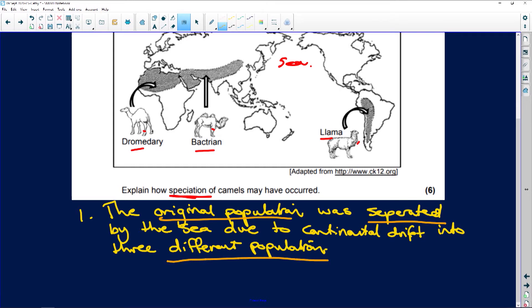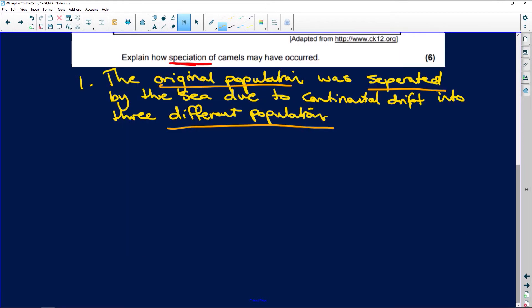So what have we got? The original population is separated in some way into different populations. Number two: There was no gene flow. They were not mating. They're separated, they're on different areas, so there was no gene flow between the populations.